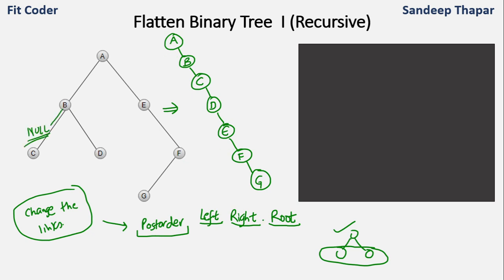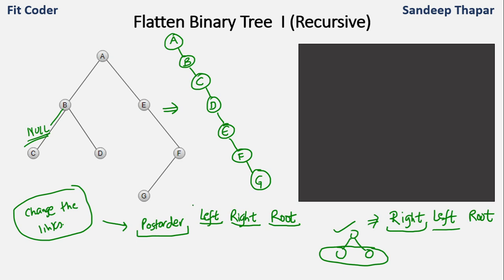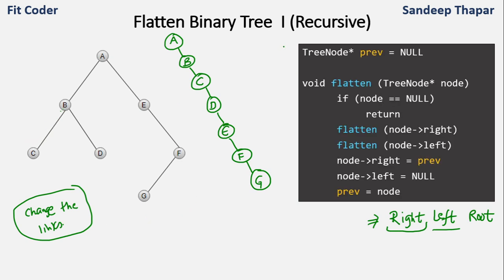Instead of doing left-right-root, we can process the tree as right, left, and root. For each node, first we fix the right subtree, then we set the left node as null, and then we process the root node. So the traversal choice is right, left, and root — this can be thought of as reverse post-order traversal. We keep a variable 'previous' which will track the previous node.